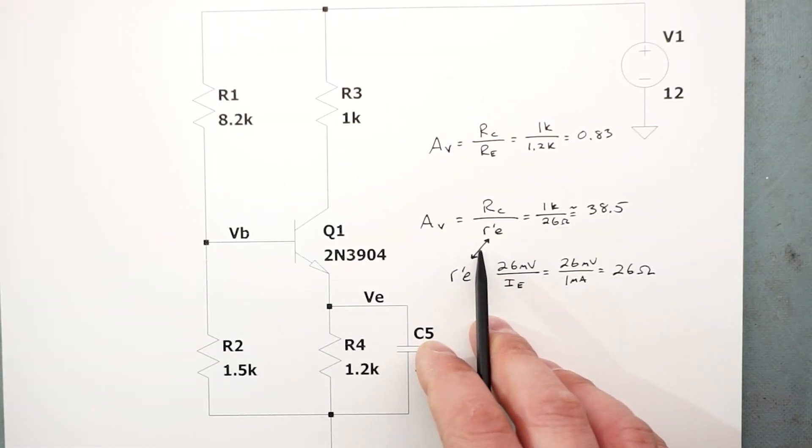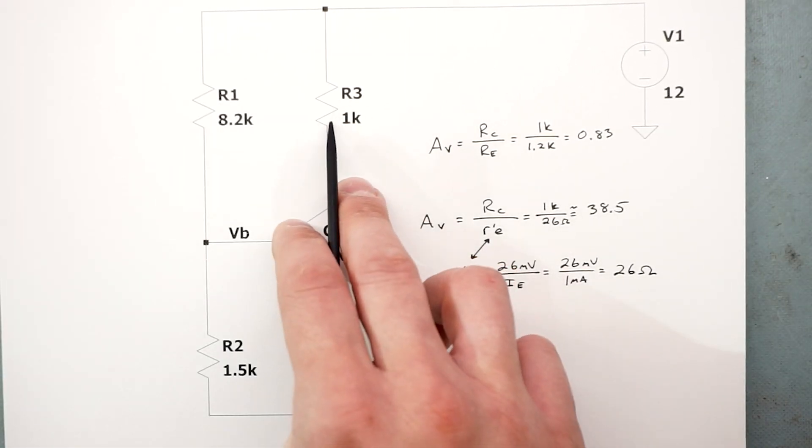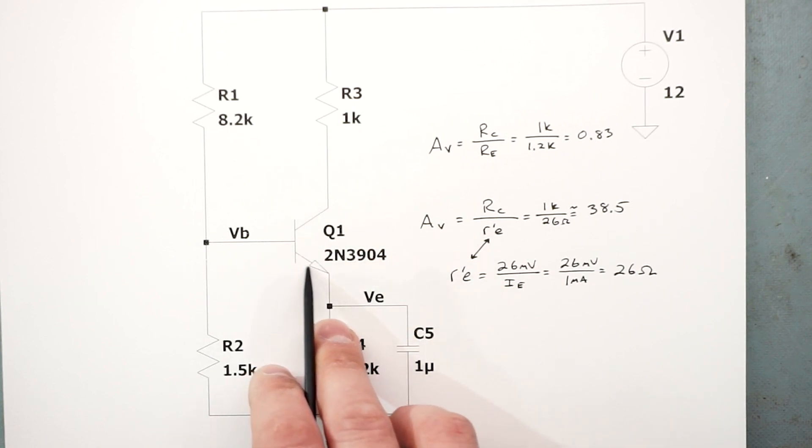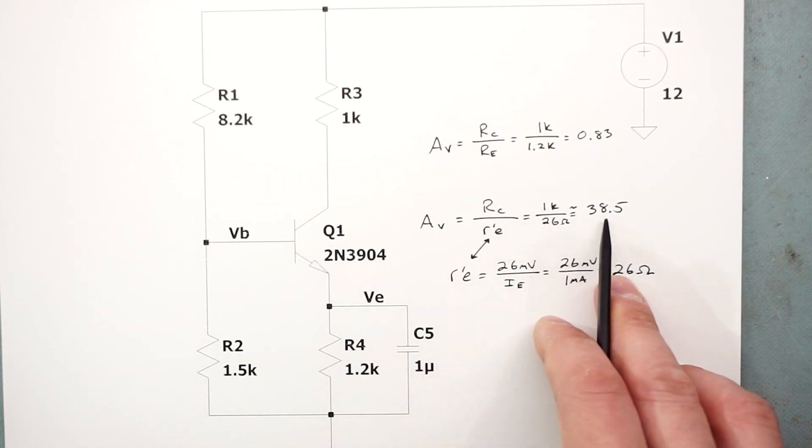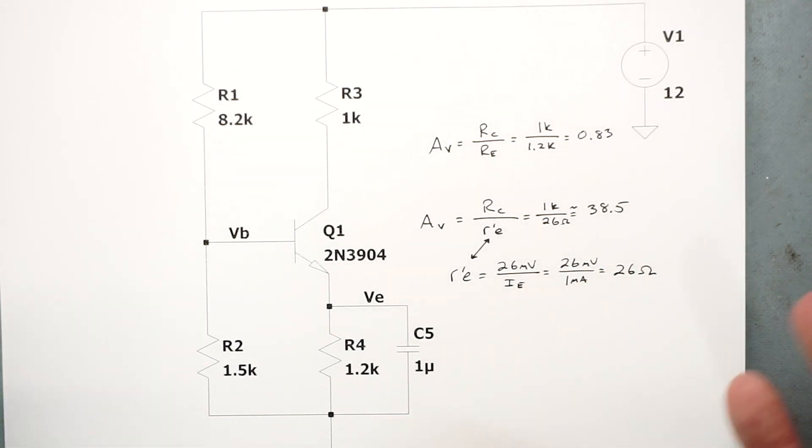So we do that formula: 26 divided by one turns out to be 26 ohms of resistance for the AC signal inside of this guy. We plug that back in and our gain then turns into that ratio of the collector versus the internal AC resistance. That becomes 1k divided by 26 ohms and we now have a gain of 38.5. So our gain is greater than one and it should oscillate, except we're not providing any feedback yet, but we're getting to that.